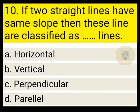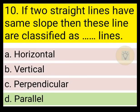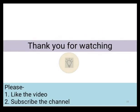If two straight lines have the same slope, then these lines are classified as horizontal or vertical, perpendicular or parallel? If lines are parallel, then the slope is the same, and therefore parallel is the correct answer. Thank you for watching this video.